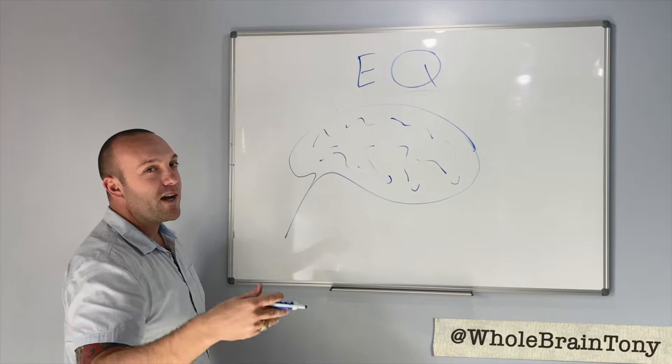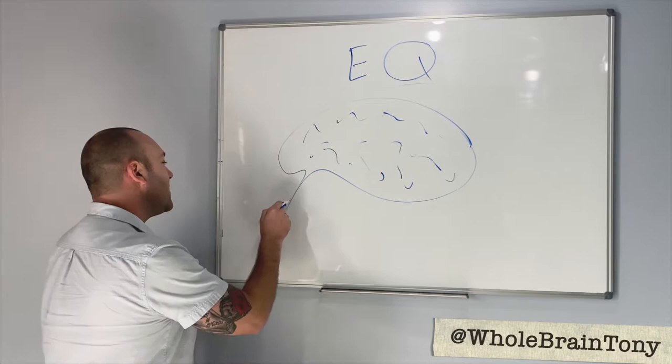So when you get information or stimuli, let's just say you stepped in dog poop on the way to work, that information enters here, and the first thing it hits is your amygdala.